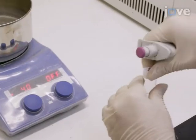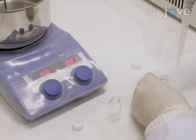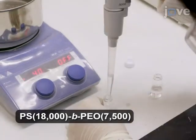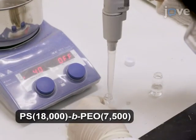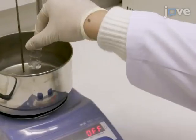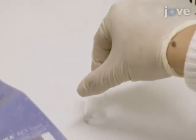To begin the procedure, dissolve 50 mg of polystyrene block polyethylene oxide in 1.5 ml of tetrahydrofuran at 40 degrees Celsius. Allow the polymer solution to cool to room temperature.